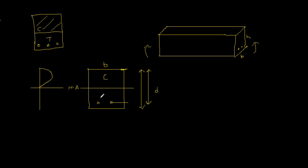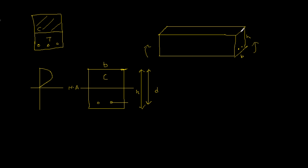If we have two layers of rebars, we take the midpoint between the two layers. If there are three rebars, we use the center of gravity, and the effective depth would be slightly higher. Just know that effective depth is a very important parameter. h is from the top fiber to the bottom fiber, while effective depth is from the top fiber to the median of the rebars.